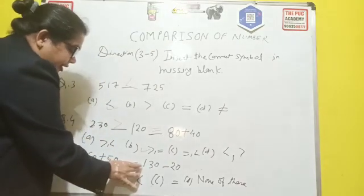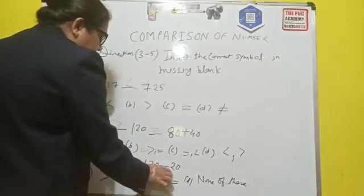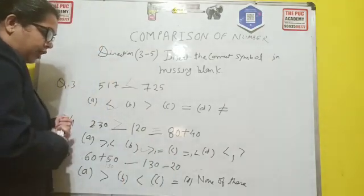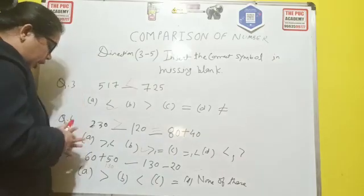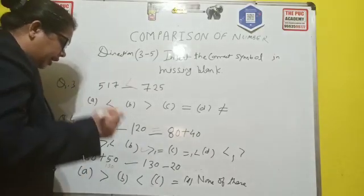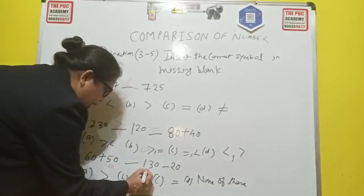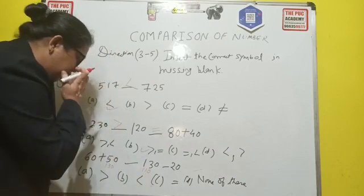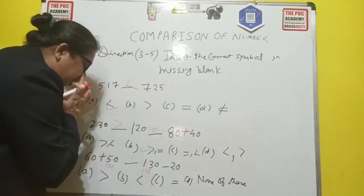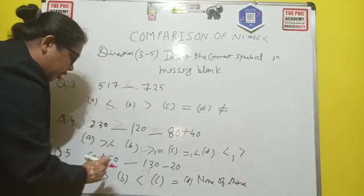And then we have a space here for the symbol. And 130 minus 20. So 130 minus 20 is your 110. So this is your 110. So in this 130 and 110, now which is the correct symbol?